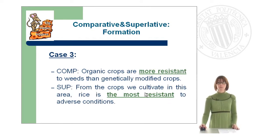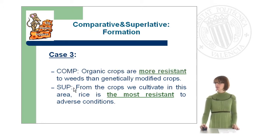Case number three — the comparative: 'Organic crops are more resistant to weeds than genetically modified crops.' And the superlative: 'From the crops we cultivate in this area, rice is the most resistant to adverse conditions.'